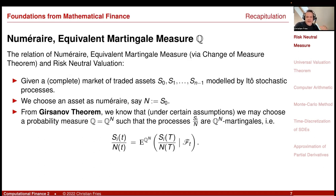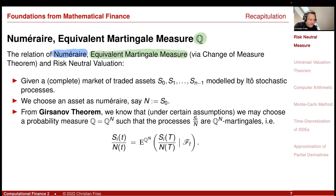First, recall the relation of the numeraire and the equivalent martingale measure, often denoted here with Q, and the change of measure theorem, the Girsanov theorem. Consider a complete market of traded assets — different stocks S0, S1, through S_{n-1} — and these are modeled by Itô stochastic processes.